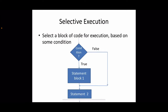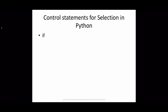In selective execution, we select a block of code for execution based on some condition. If the condition is true, we select a set of statements; if false, we skip those statements. The corresponding flowchart shows: check the condition first — if true, execute block 1, then proceed to the next statement; if false, skip directly to the next statement. This is also called decision making and branching.